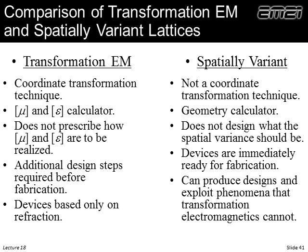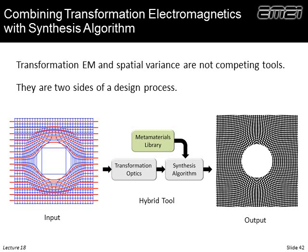I really view these not as competing tools but as two different sides of the same coin. To hybridize them: draw a ray bending map, run transformation optics to get a crazy map of μ's and ε's, use a library of metamaterials that can realize those values to come up with unit cell maps as a function of position — which is exactly the input to the synthesis algorithm — and out comes a spatially variant metamaterial lattice that is smooth, continuous, defect-free, and looks really nice.